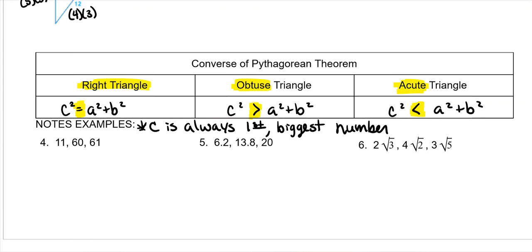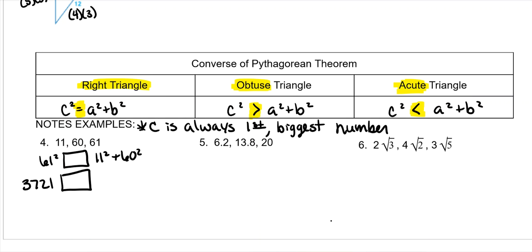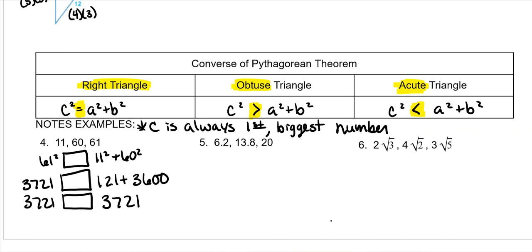When we check these, we put the biggest number first and see how they're related. For example: 61 squared is 3,721. Then 11 squared is 121, and 60 squared is 3,600. When you add those together you get 3,721 — so they're equal, meaning this is a right triangle.